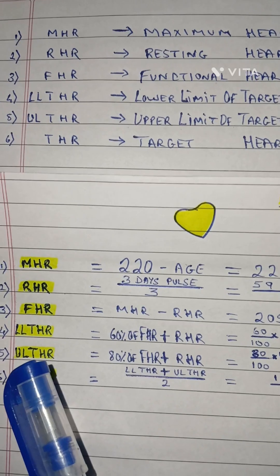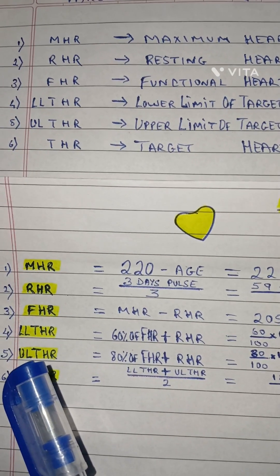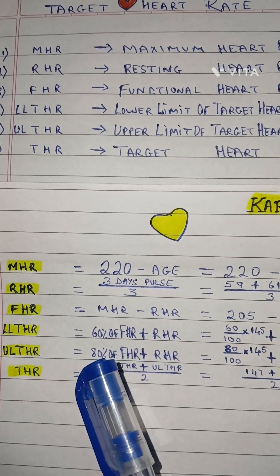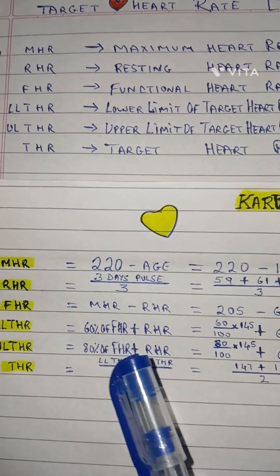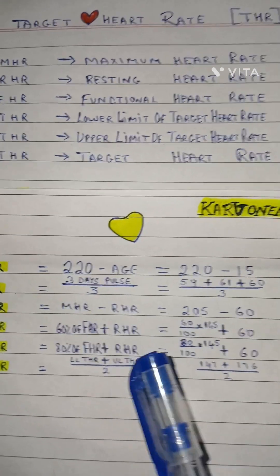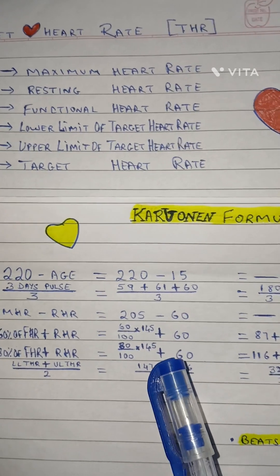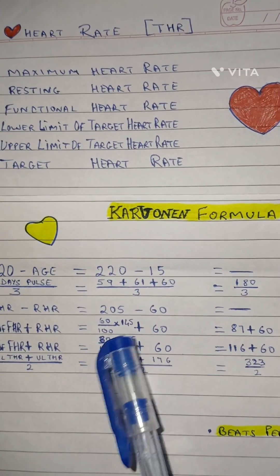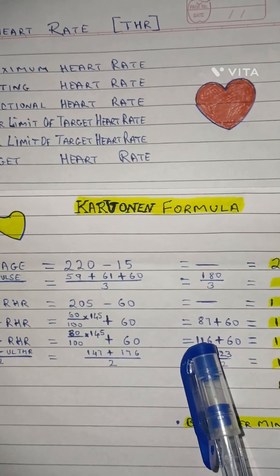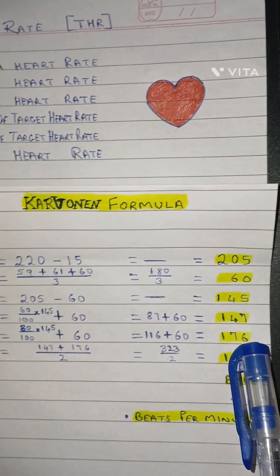Fifth step: ULTHR - Upper Limit of Target Heart Rate. That is 80% of FHR - Functional Heart Rate - plus RHR - Resting Heart Rate. So 80 divided by 100, multiplied by 145, plus 60. Solving the left-hand side, we get 116 plus 60, which equals 176.